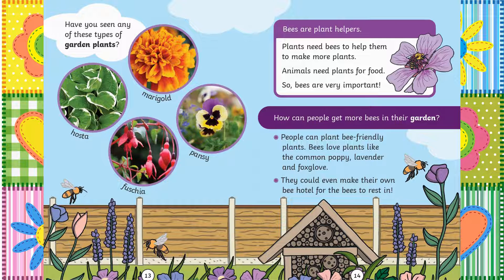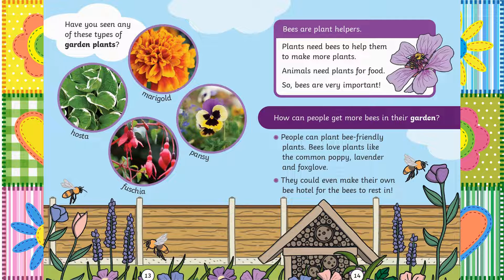Have you seen any of these types of garden plants? Marigold, hosta, fuchsia and a pansy. Bees are plant helpers. Plants need bees to help them to make more plants. Animals need plants for food. So bees are very, very important. How can people get more bees in their garden? People can plant bee-friendly plants. Bees love plants like the common poppy, lavender and foxglove. They could even make their own bee hotel for the bees to rest in.